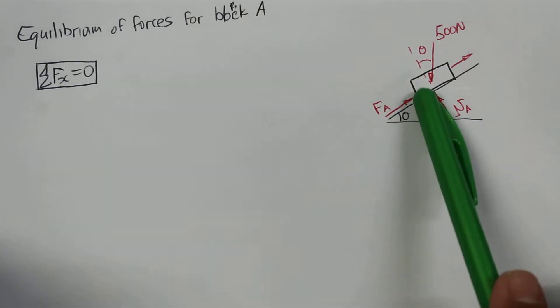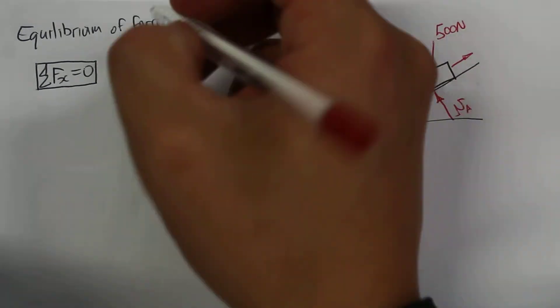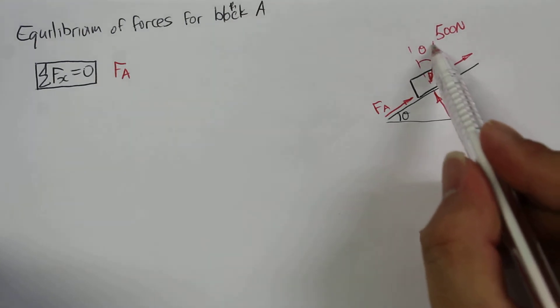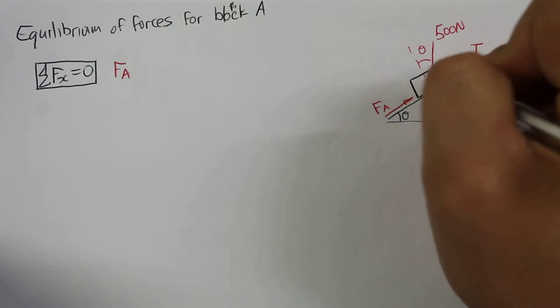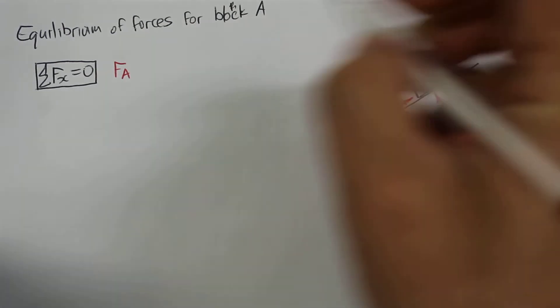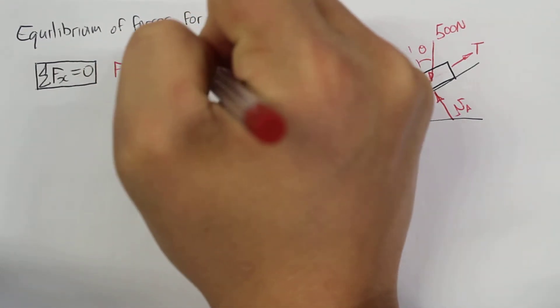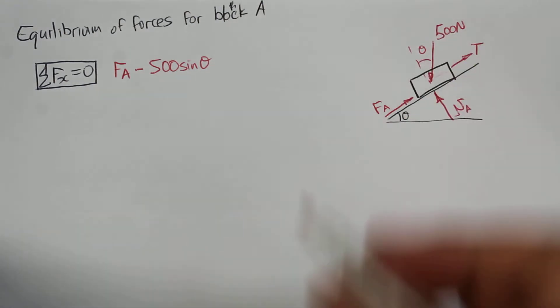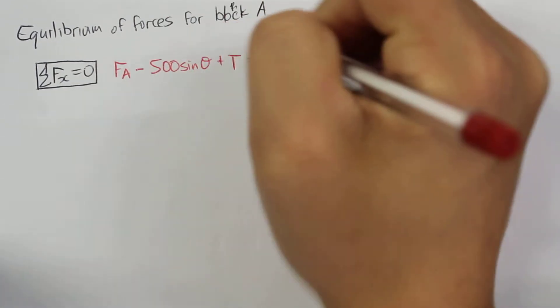Okay, so in the x direction, we have friction force going in the positive x direction. We have a component of the 500 newton force going down the incline as well. So that component is going to be 500 times sine theta. We also have tension force going back up the incline, so plus T, and then this is equal to 0.